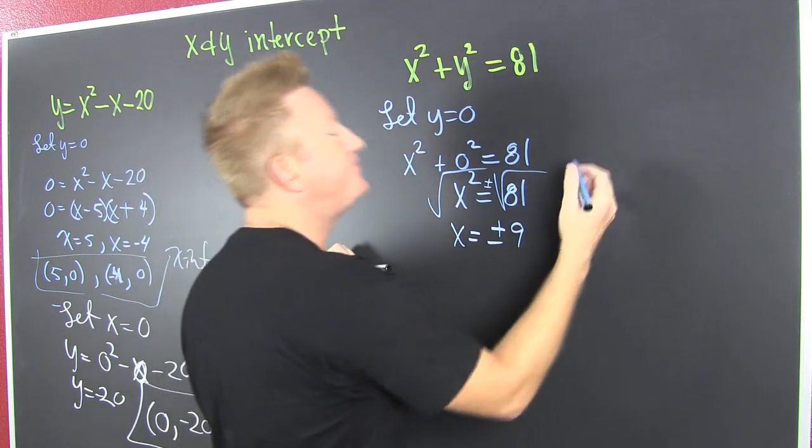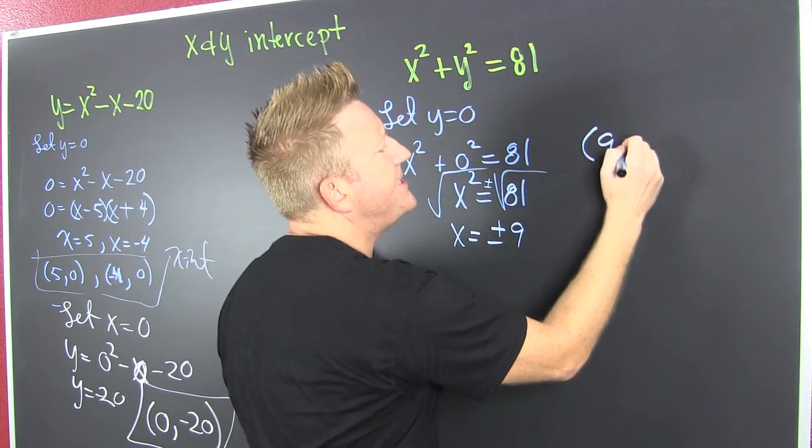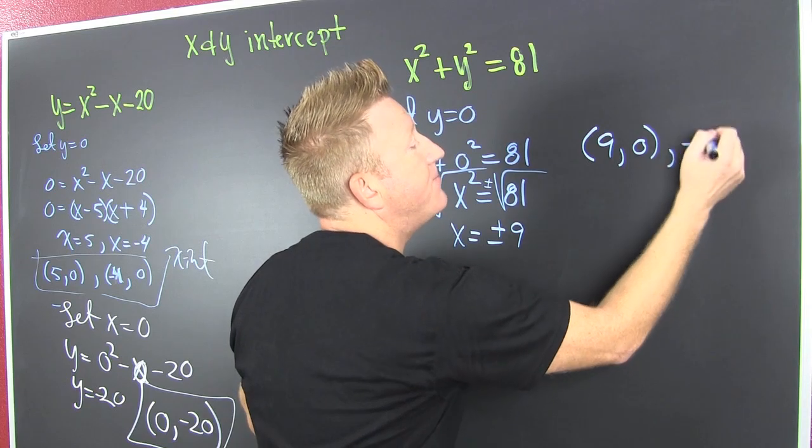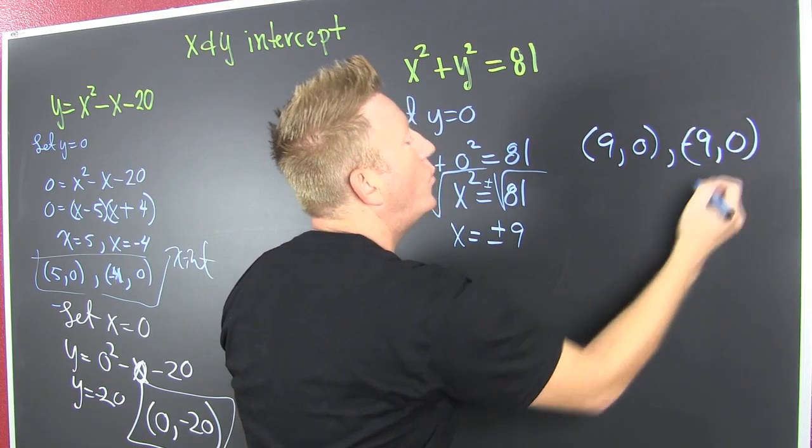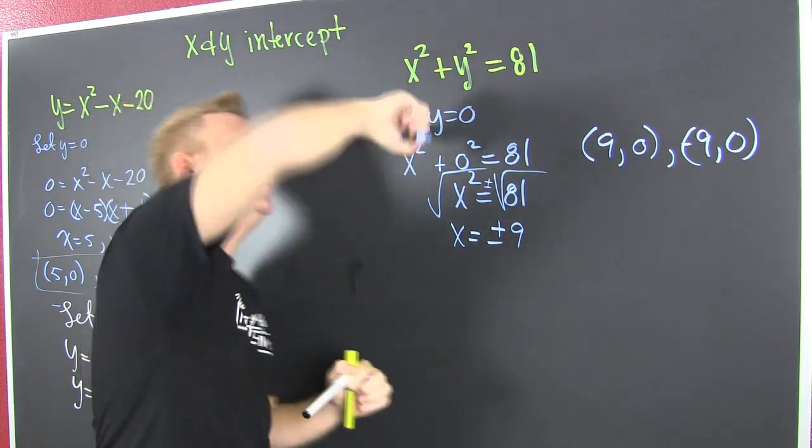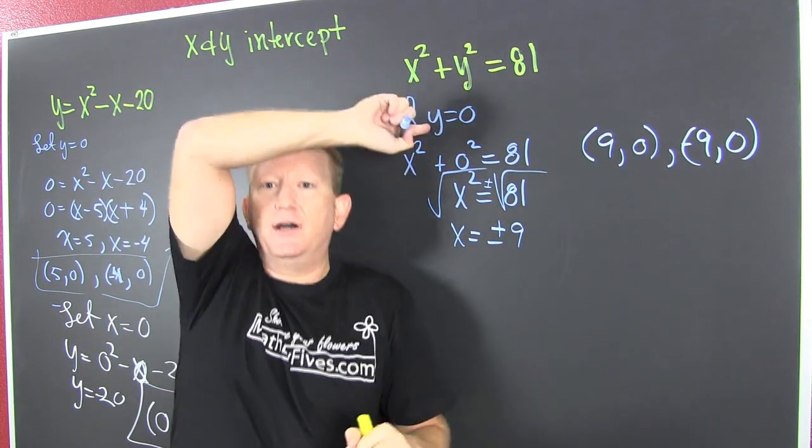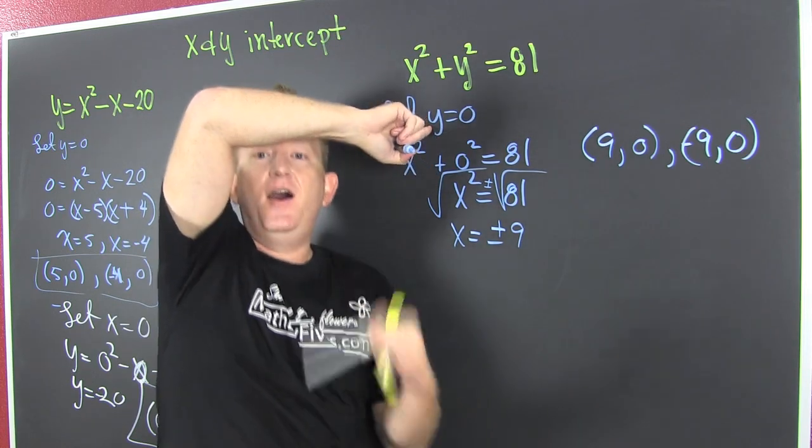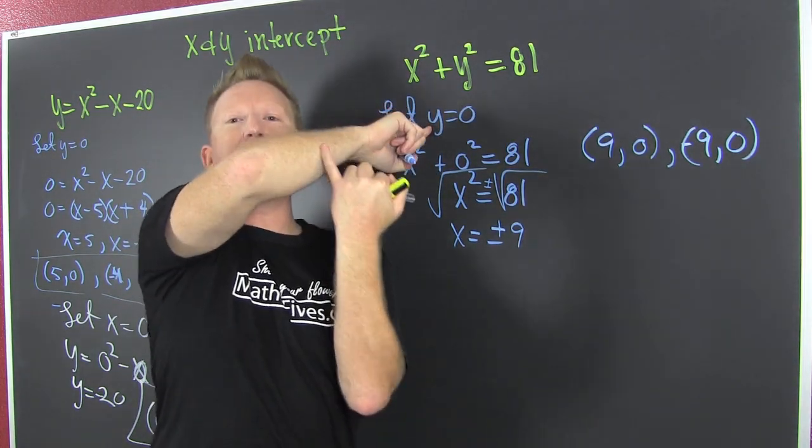What does that even say? That says when x is 9, y is 0. And when x is minus 9, y is 0. Now, when you let y be 0, what does that find? What does that find when y is equal to 0? That's the x-intercepts! Yeah!